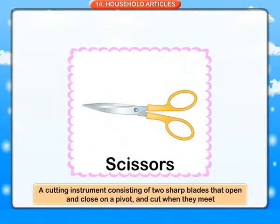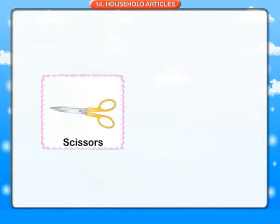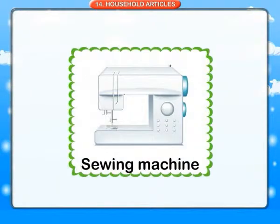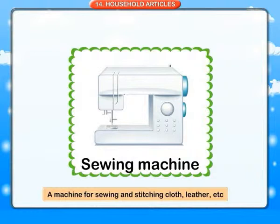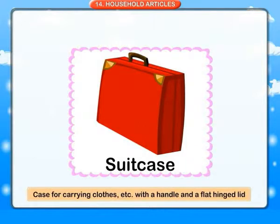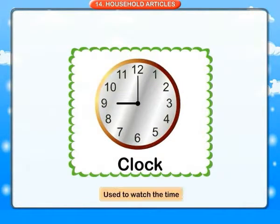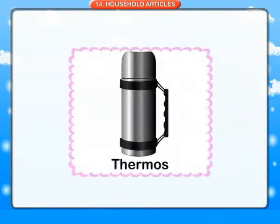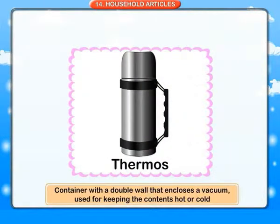Scissors: a cutting instrument consisting of two sharp blades that open and close on a pivot and cut when they meet. Sewing machine: a machine for sewing and stitching clothes, leather, etc. Suitcase: a case for carrying clothes, etc. with a handle and a flat hinged lid. Clock: used to watch the time. Thermos: a container with a double wall enclosing a vacuum, used for keeping contents hot or cold.